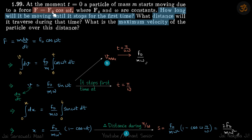Force is given as F₀ cos(ωt). We need to find how long the particle will be moving until it stops for the first time, what distance it will cover, and what is the maximum velocity during that time. Since force is given as a function of time, we'll integrate to find velocity, and then integrate again to get displacement.